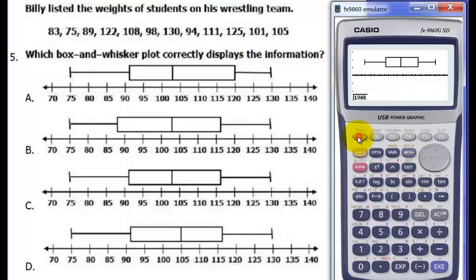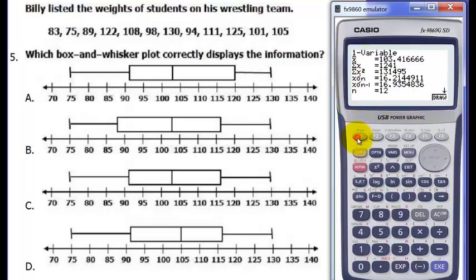So once you graph this, since our graph type is in box and whisker plot, it will give us box and whisker plot. So how do I identify the lower extreme? Just press F1, scroll down, your minimum X is your lower extreme, which is 75. This is 75, this is 75, 75, 75. Alright.